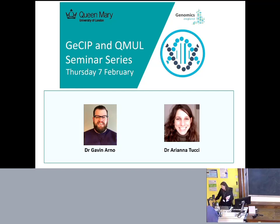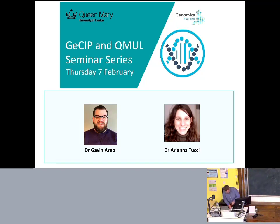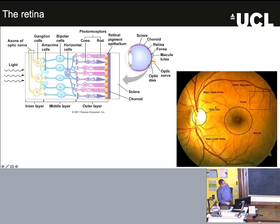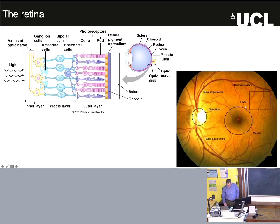Let's begin with the retina. For those not obsessed with the back of the eye, this is the globe and this is a fundus image of the back of the eye. We're looking at the different structures of the retina, which is made up of different cell layers. The rods and cones — the photoreceptors — convert a light impulse into an electrical signal via the bipolar cells, which feed down the optic nerve to the brain.